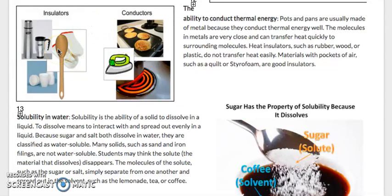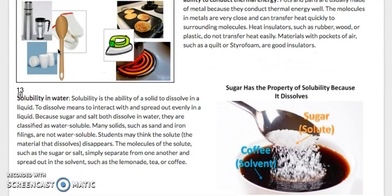Solubility and water. Solubility is the ability of a solid to dissolve in a liquid. To dissolve means to interact with and spread out evenly in a liquid. Because sugar and salt both dissolve in water, they are classified as water-soluble. Many solids, such as sand and iron filings, are not water-soluble. Students may think the solute, the material that dissolves, disappears. The molecules of the solute, such as the sugar and salt, simply separate from one another and spread out in the solvent, such as lemonade, tea, or coffee. The solute is the particle that dissolves in the solvent, which is usually a liquid.